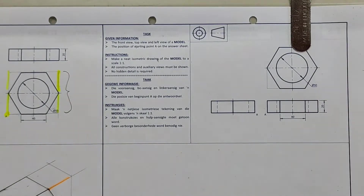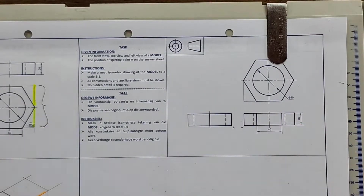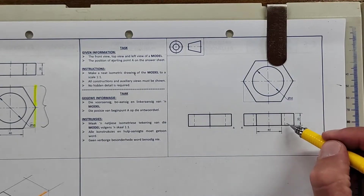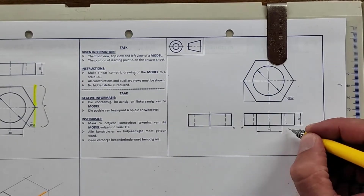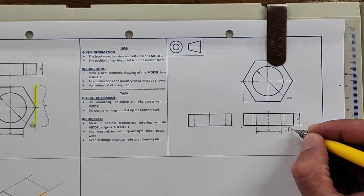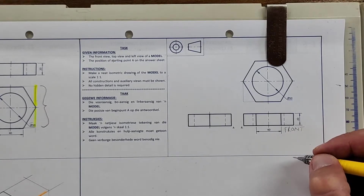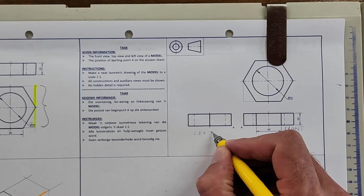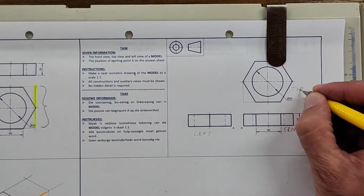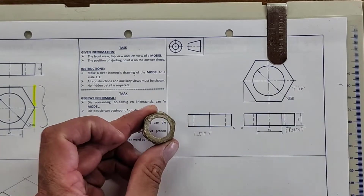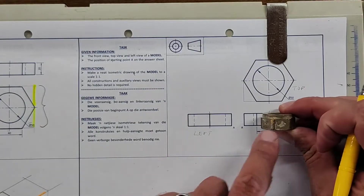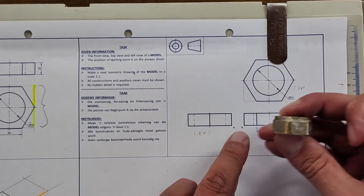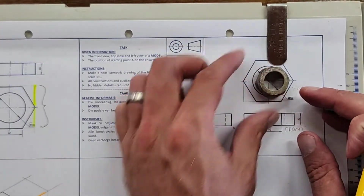Third angle of graphic projection. Which is the front view — A or B? That's the front, so the nut is lying down. That is the left view, and that is the top view. From the front I'm seeing three faces, from the left I'm seeing two faces, and from the top it looks like a flat part.